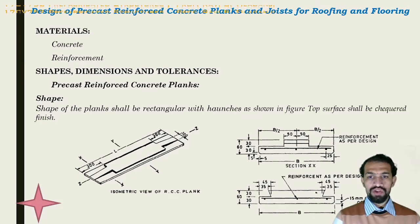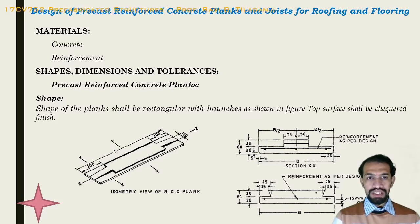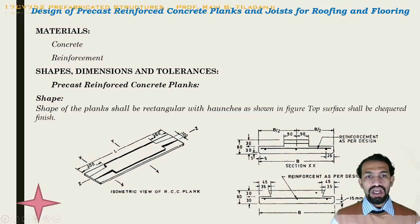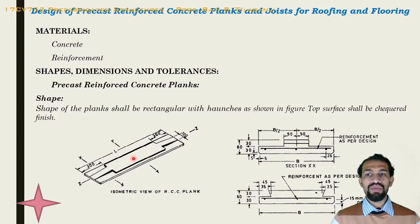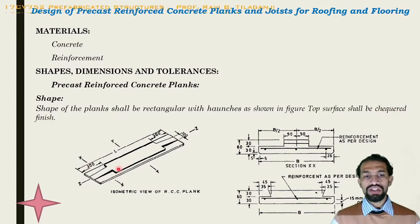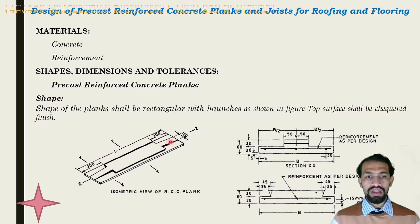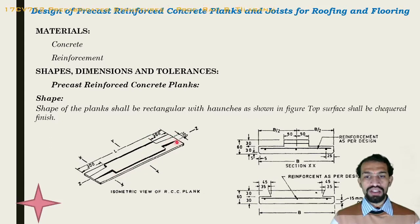Materials are concrete and reinforcement as seen earlier. The shape of pre-cast reinforced concrete planks shall be rectangular with haunches as shown in the figure. The top surface shall be chequered with a finish. We can see the total length and total breadth, wherein the haunched and chequered part is arranged in this way.